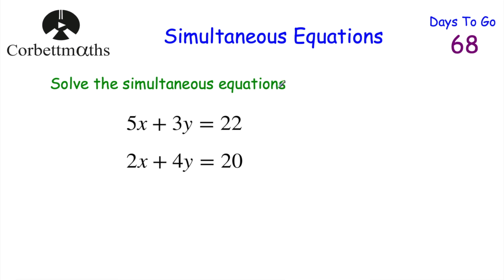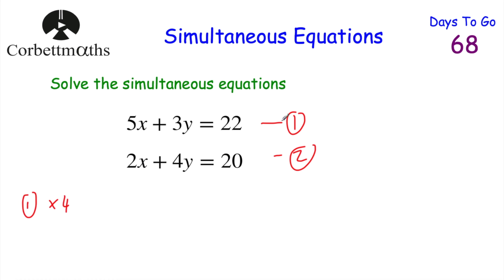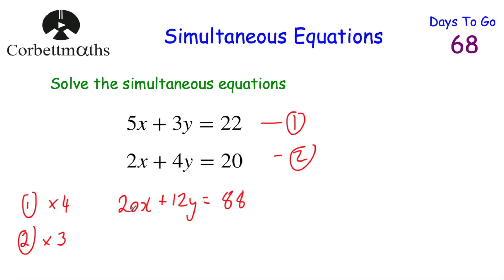Let's have a look at our next question. Solve the simultaneous equations: 5x plus 3y equals 22 and 2x plus 4y equals 20. I'll number them 1 and 2. This time, rather than multiplying just one equation, we're going to multiply both. I'm going to multiply equation 1 by 4 and equation 2 by 3 to give 12y and 12y. Multiplying equation 1 by 4: 5x times 4 is 20x, 3y times 4 is plus 12y, and 22 times 4 is 88.